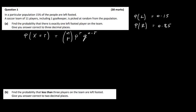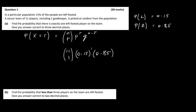So we need to work out the probability of exactly one left-footed player from a team of 11. That's 11 choose 1, times 0.15 to the power of 1 (since r equals 1), times 0.85 to the power of 11 minus 1, which is 10. When you work that out you get 0.325, correct to three decimal places. That's it for part a.